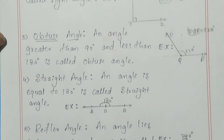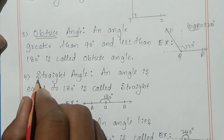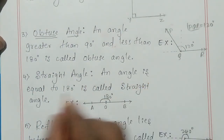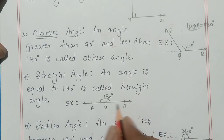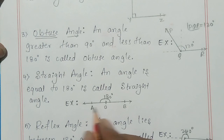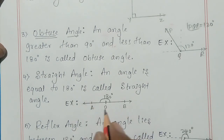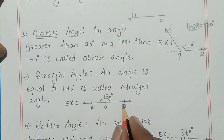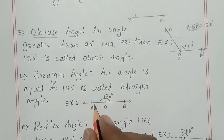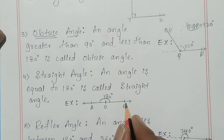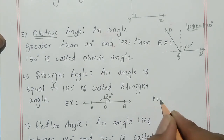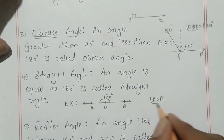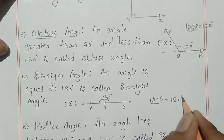Next is straight angle. An angle equal to 180 degrees is called a straight angle — that is exactly 180 degrees, which is a straight line. The example shown is angle AOB, where angle AOB is equal to 180 degrees.